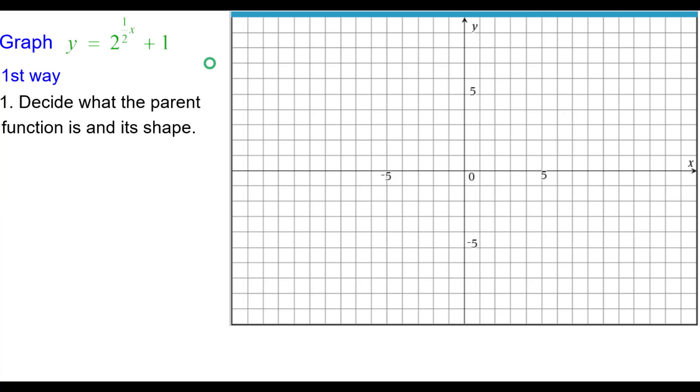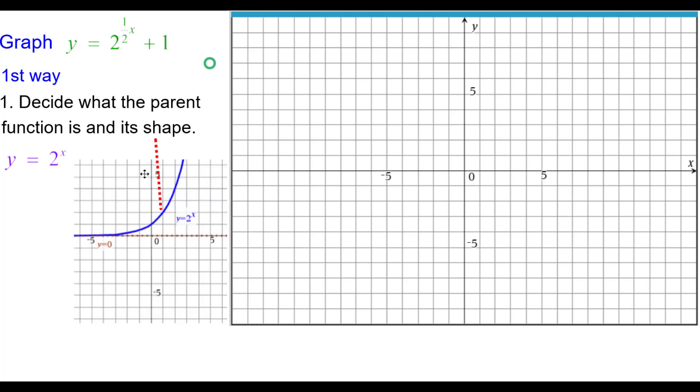First we need to decide what the parent function is and its shape. The parent function is y equals 2 to the x and this is the shape of the parent function including the horizontal asymptote. We sometimes refer to this as an easy chair outline.